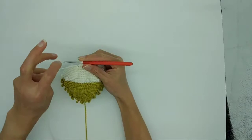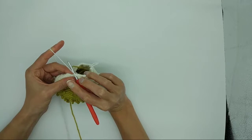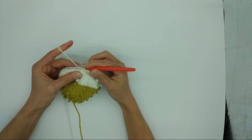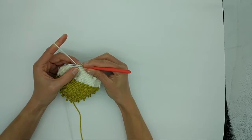You insert your hook in the next stitch. We're going to yarn over, draw up a loop. So we now have two loops on the hook. Now we're going to yarn over, draw the loop, and pull it through this first stitch on the hook four times.